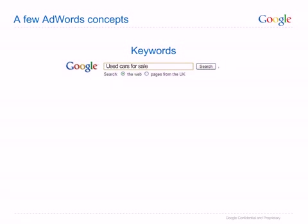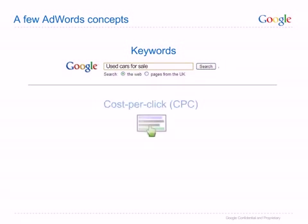With AdWords, you specify the keywords for which you want your ad to appear, so your ad will only appear to users who are searching for your product or service. Cost per click, or CPC, is the amount of money it will cost you each time someone clicks on your ad and visits your website.